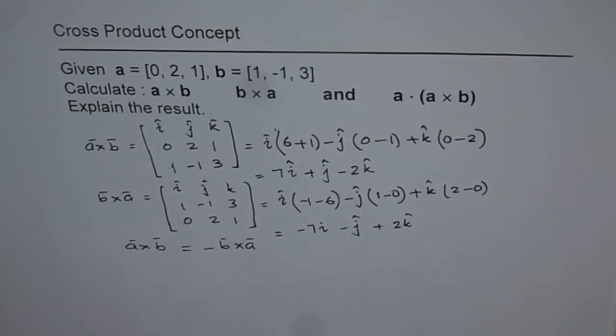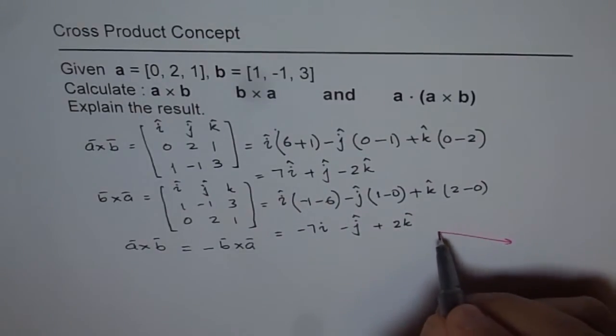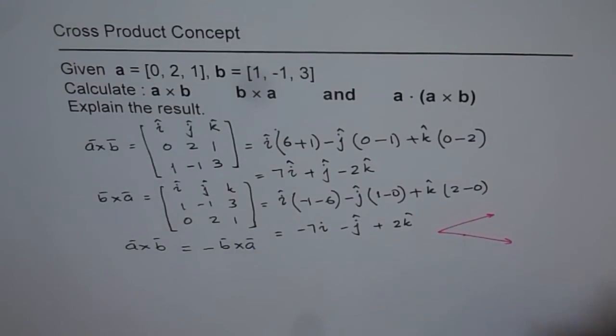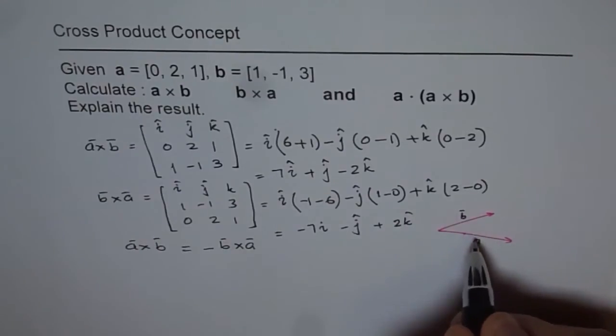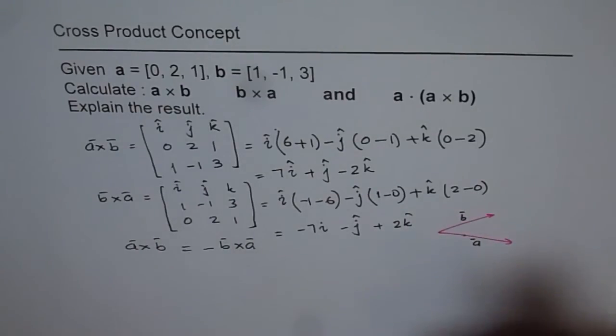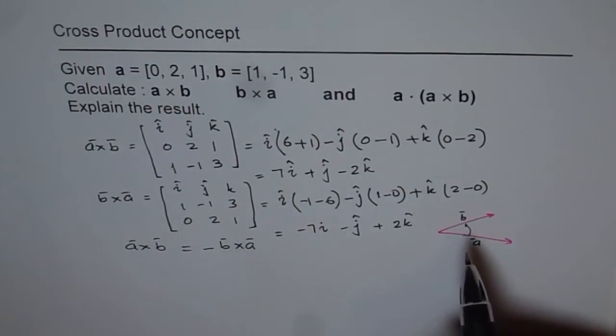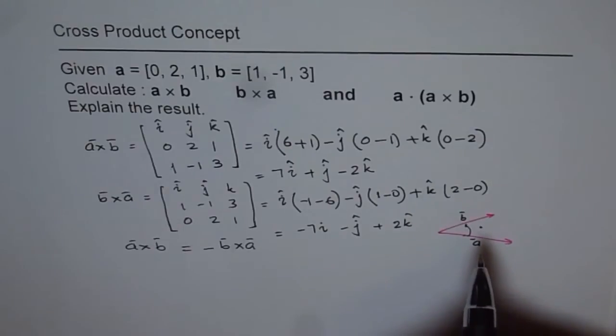In case we have vectors, let us say A and B on this piece of paper, then let us say this is A and this is vector B for us. Then the right-hand rule will be if you turn your fingers from A to B, the thumb points towards the direction. So it will be a vector coming out of the paper. So that is vector A cross B.